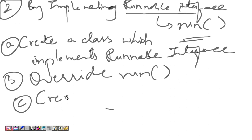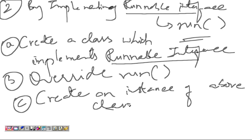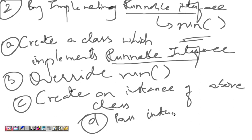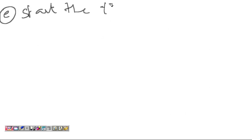Third step: create an instance of the class that implements Runnable. Fourth step: pass that instance — the runnable object — as a parameter to the Thread class. Last step: start the thread.